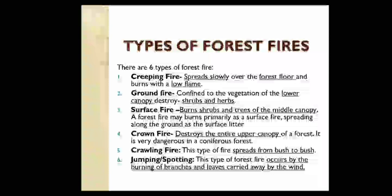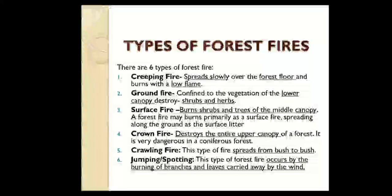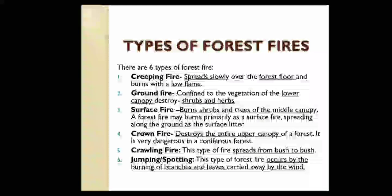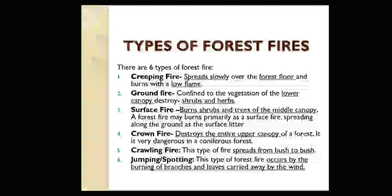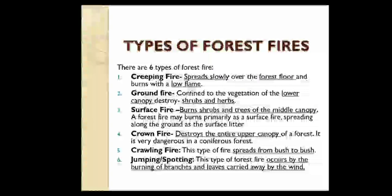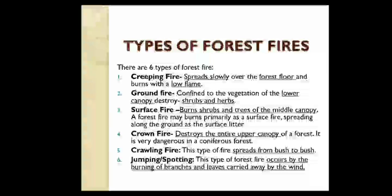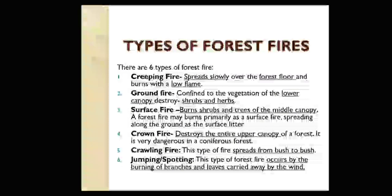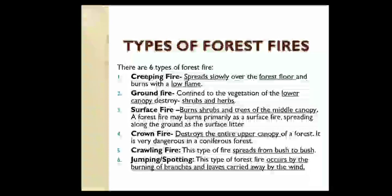The types of forest fire: there are basically six types. Firstly, creeping fire, which spreads slowly and burns with low flame. Secondly, ground fire, which affects the lower canopy and destroys shrubs and herbs. Thirdly, surface fire, which burns shrubs and trees of the middle canopy. Crown fire destroys the entire upper canopy of a forest. Crawling fire spreads from bush to bush, whereas jumping or spotting forest fire occurs by burning of branches and leaves carried away by the wind.